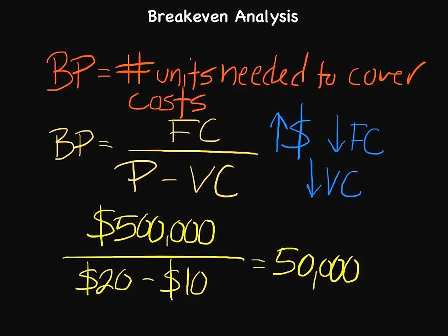So those are some things to consider: raising prices, decreasing variable costs, decreasing fixed costs. These three areas are variables you can change, though you may not be able to change them significantly enough to make the break-even point reasonable for your business. But it's at least a starting point for discussion. Just because the break-even point is a little higher than you originally anticipated, you can think through ways to change it and make it more attractive. A very useful, very easy, very basic tool — you'll probably spend more time adding up all the fixed and variable costs than actually solving the equation, but very valuable for helping you price your products.